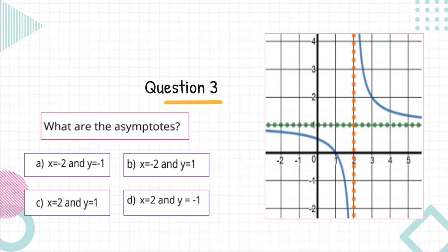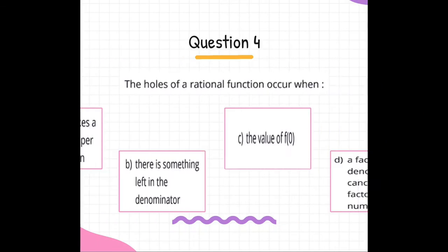Question 3: What are the asymptotes? Vertical asymptote x equals 2, horizontal asymptote y equals 1. The correct answer is C, x equals 2 and y equals 1.